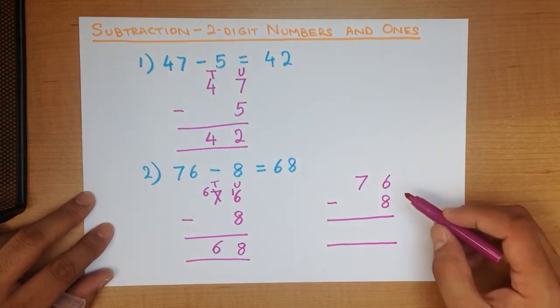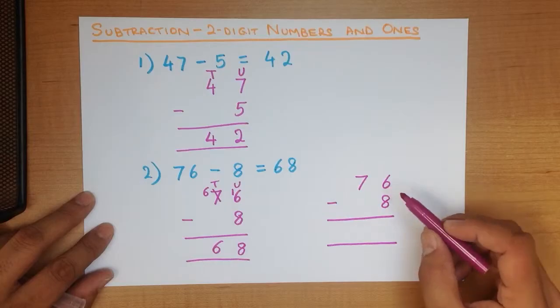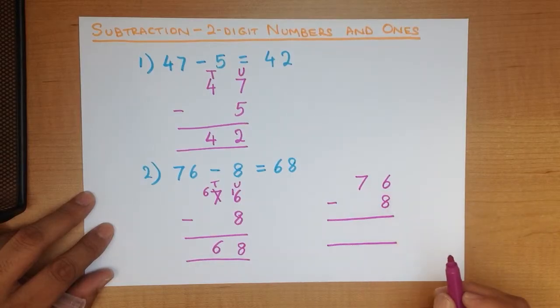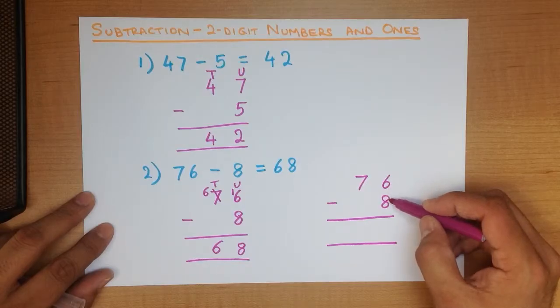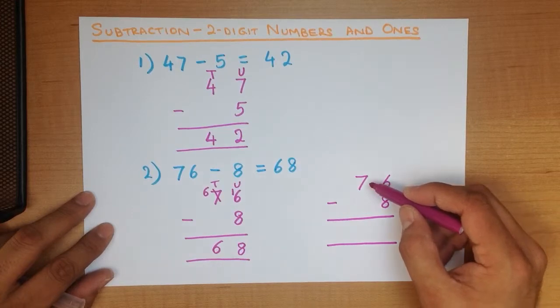And now what we do is, we subtract starting from the column on the right hand side. Here, the number 6 is smaller than number 8. So we can't subtract this. What we have to do is, we have to take 1 from here.